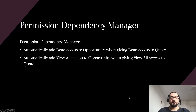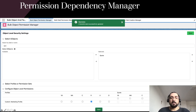Another experimental feature hidden under feature parameters is permission dependency management. For example, if you enable this feature, the package will automatically add read access to opportunity when you give read access to quote, or automatically add view all access to opportunity when giving view all access to quote, because access to quote depends on access to opportunity. You can see this in action: for a profile where I selected only read permission for quote, the message says two records were successfully updated — because it updated opportunity access as well. This is a subtle feature and not everyone would want it, so it is hidden under the feature parameter.